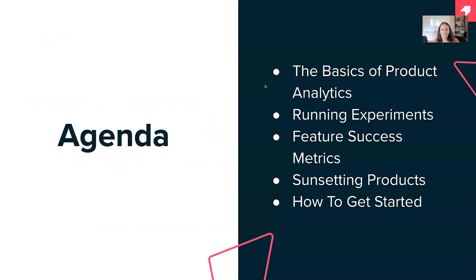The agenda today is: first, we're going to talk about the basics — what you need to know to understand product analytics and how to use it. Then we're going to go through several different examples: running experiments, feature success metrics, and sunsetting a product or feature. And lastly, we're going to touch on how do you get started and what are the first steps to become excellent at product analytics.